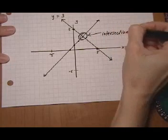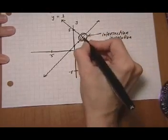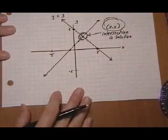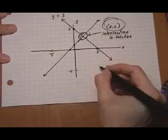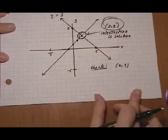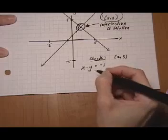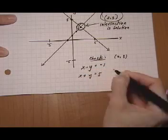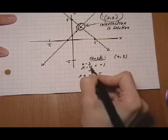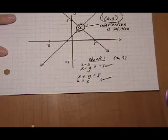The intersection point is the solution of the system. So the intersection is two, three. So that is solving the system by graphing. And you can always double check by making sure the point two, three satisfies both equations in the system. X minus y equals minus one, and x plus y equals five. So first the x minus y equals minus one. If I have two minus three, yes, that equals minus one. If I have two plus three, yes, that equals five. And then you know for sure you did it right.